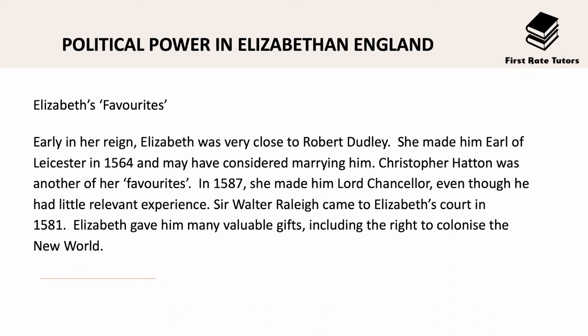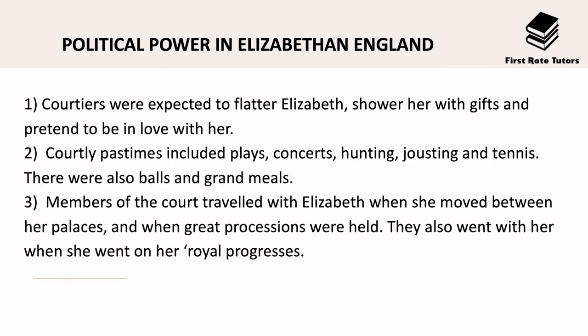Early in her reign Elizabeth was really close to Robert Dudley, and she made him the Earl of Leicester in 1564, having seriously considered marrying him. Christopher Hatton was another favourite and in 1587 she made him Lord Chancellor even though he had little relevant experience. Sir Walter Raleigh also came to Elizabeth's court in 1581 and she gave him many valuable gifts including the right to colonise a new world. In exchange, courtiers were expected to flatter Queen Elizabeth, shower her with gifts and often pretend to be in love with her. Courtly pastimes included plays, concerts, hunting, jousting and tennis, and there were also grand meals. Members of the court travelled with Elizabeth when she moved between her palaces and when great processions were held.